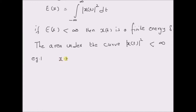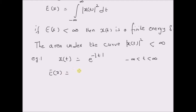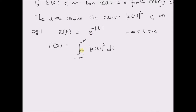Example 1. So given a signal x(t) defined as exponential of minus absolute value of time t, where time t is a real value between minus infinity and plus infinity. Now we can evaluate E of x by using the integral formula: integral from minus infinity to plus infinity of |x(t)|² dt. And by inserting x(t) = e^(−|t|), we have the integral from minus infinity to plus infinity of |e^(−|t|)|² dt.